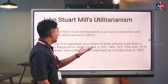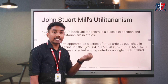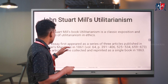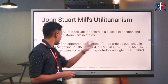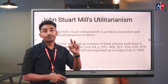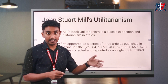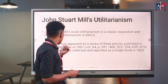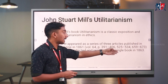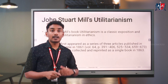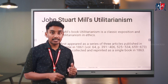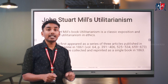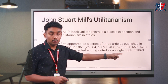John Stuart Mill's book Utilitarianism is a classical exposition and defense of utilitarianism in ethics. His book, which came out in 1863, defends utilitarian ethics. The first essays appeared as a series of three articles published in Fraser's Magazine in 1861. Those articles were then collected, reprinted, and published as a single book in 1863. John Stuart Mill's utilitarianism was a continuation of theories from the 18th century, and it culminated in the publication of the book Utilitarianism in 1863.